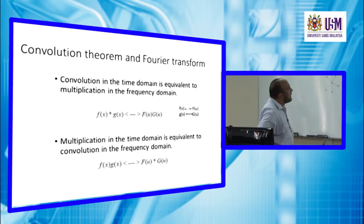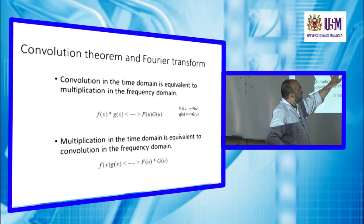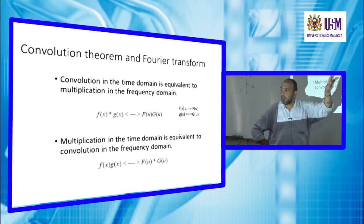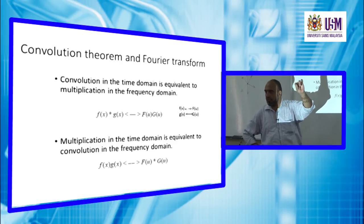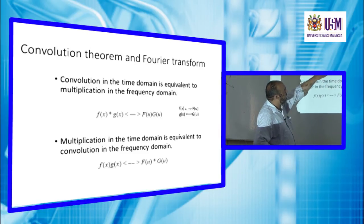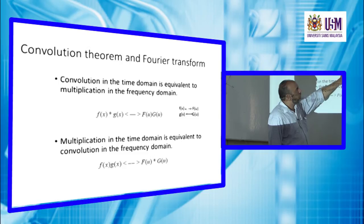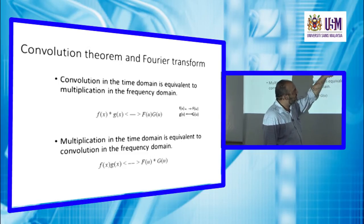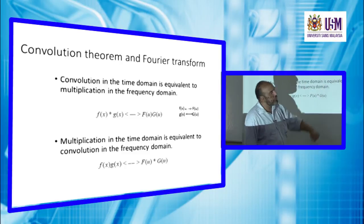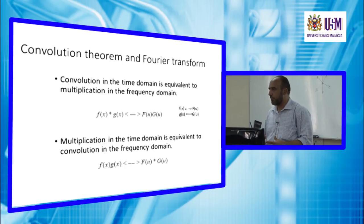Therefore we use the convolution theorem with the Fourier transform: the convolution of two functions in the time or space domain equals the point-by-point multiplication of their Fourier transforms in the frequency domain. That is, f(x) * g(x) = F(u) × G(u), where F(u) and G(u) are the Fourier transforms of f(x) and g(x).